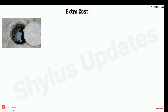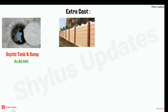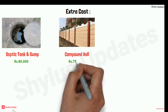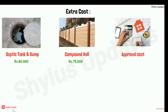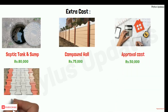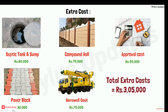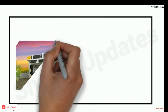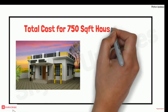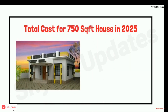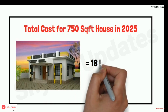Extra costs: Septic tank and sump rupees 80,000; Compound wall cost rupees 75,000; Approval cost rupees 50,000. When you add all these extra costs, the total extra cost is rupees 2,05,000. Therefore, the total cost for a 750 square feet house in 2025 would be from rupees 18 lakh to 20 lakh.